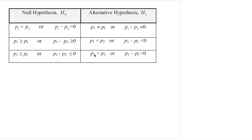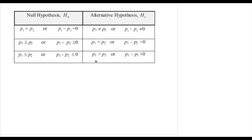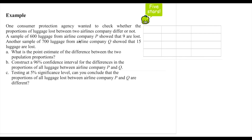Writing out the null and alternative hypothesis for the difference of two population proportions is similar to writing them for two population means. In this example, we are first asked to find the point estimate of the difference between two population proportions, then construct a 96% confidence interval, and finally conduct a hypothesis test. A sample of 600 luggage from airline company P showed that 9 are lost, and another sample of 700 luggage from airline company Q showed that 15 are lost.